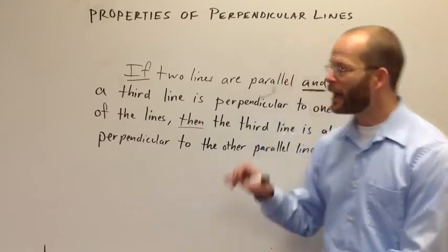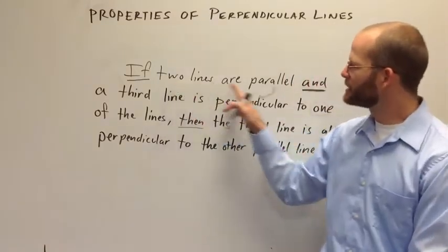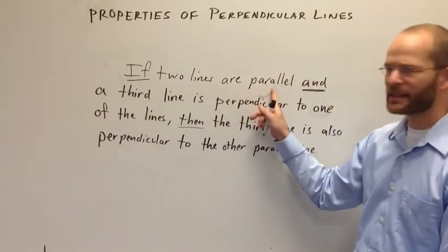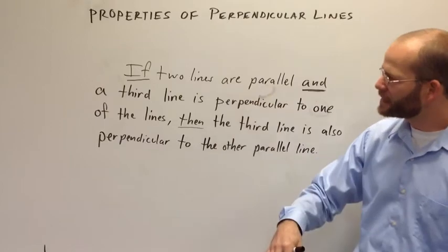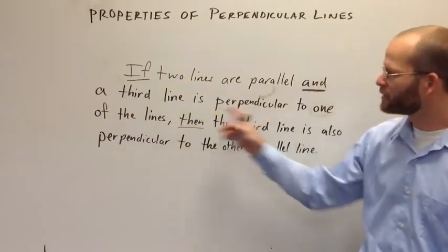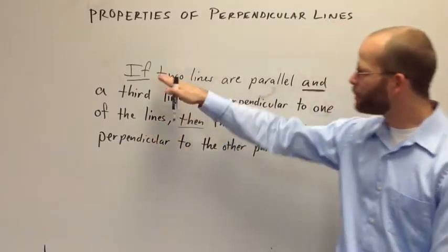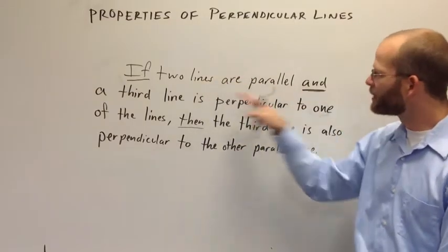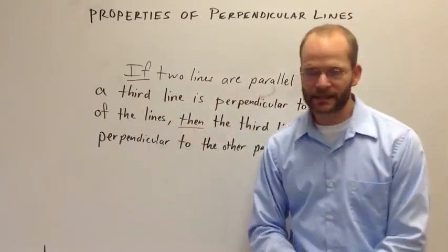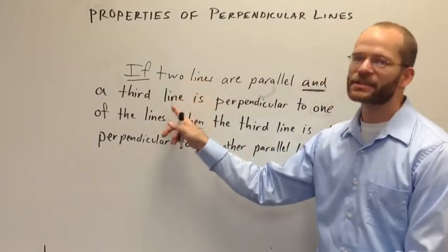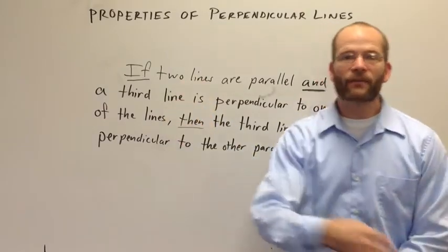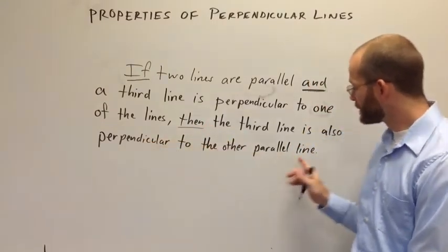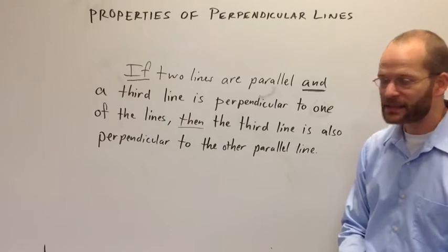So there's a test here. When I ask the question, is this hypothesis true in a particular instance, it's not enough that I have two lines that are parallel. Neither is it enough that I have a third line that's perpendicular to one of the lines. I must have both pieces in place. I have to have two lines parallel and a third line that's perpendicular to one of the lines. Only when both of those conditions are met can I then go forward with the law of detachment and begin to conclude that this conclusion is true in that instance.